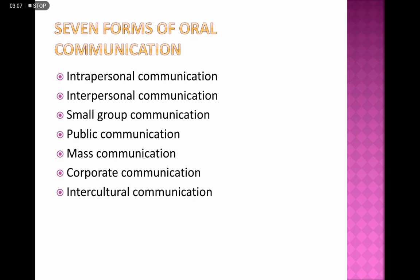Let us discuss some of the different forms of oral communication. The first one is intrapersonal communication — the kind of communication that takes place within ourselves when we talk to ourselves in our thoughts. Examples include soliloquies in dramas. Interpersonal communication is the communication that takes place between two people or a small group, such as classroom communication or communication in small clubs.